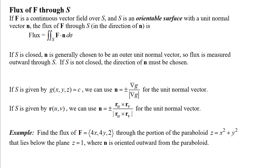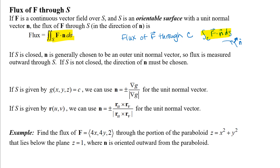If you remember before, when we did flux of F through a curve, we had a line integral with F dot N dS, where N was a unit normal vector to the curve, generally outward if our curve was closed, or we chose a direction for that unit normal vector N. The same idea here — notice that it's almost exactly the same integral, just instead of integrating along a curve with an arc length differential, you're integrating over a surface with a surface area differential.